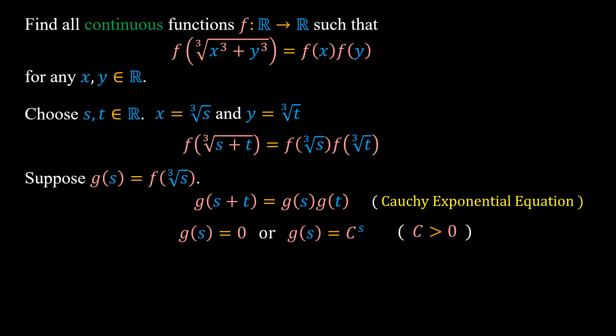All the solutions are g of s equals zero or g of s equals C to the power of s, where C is a positive real number. By the definition of g of s, we have f of the cubic root of s equals zero or f of the cubic root of s equals C to the power of s.